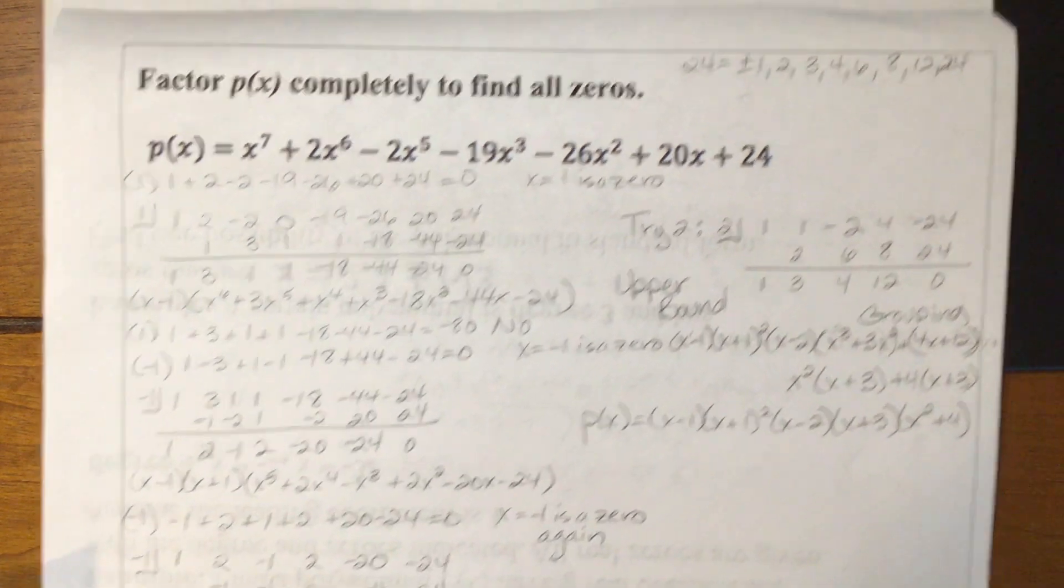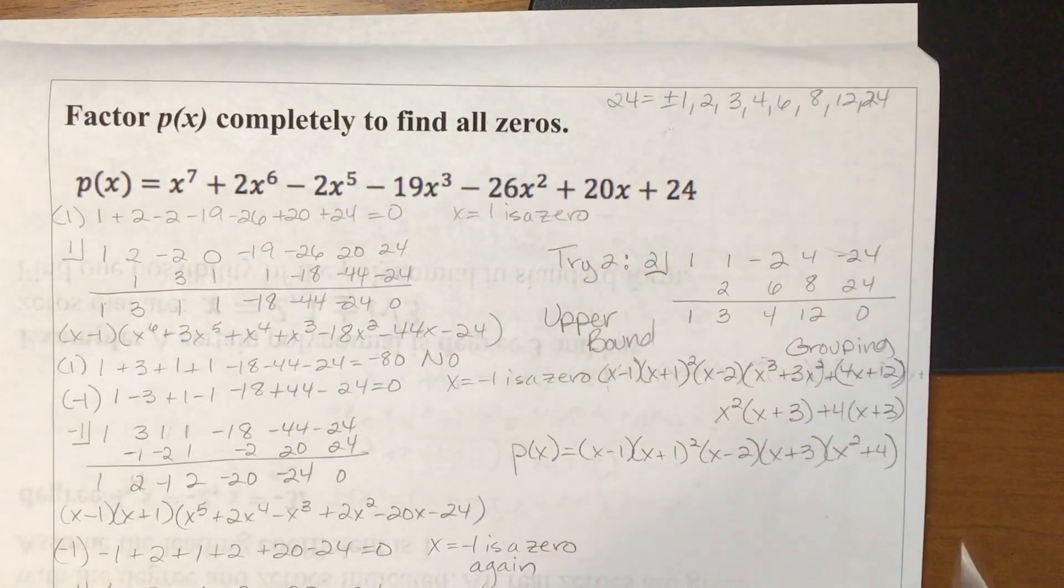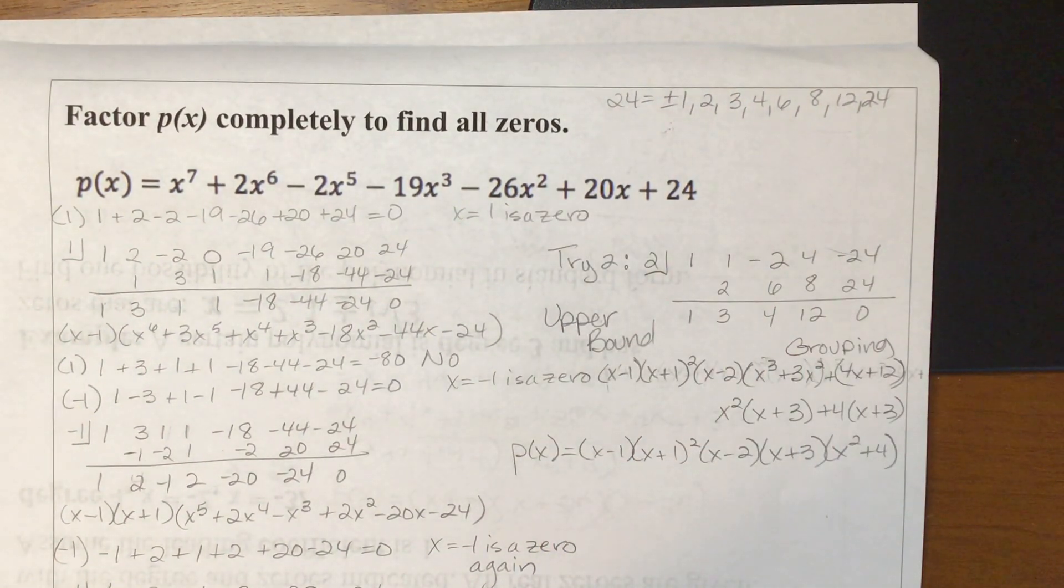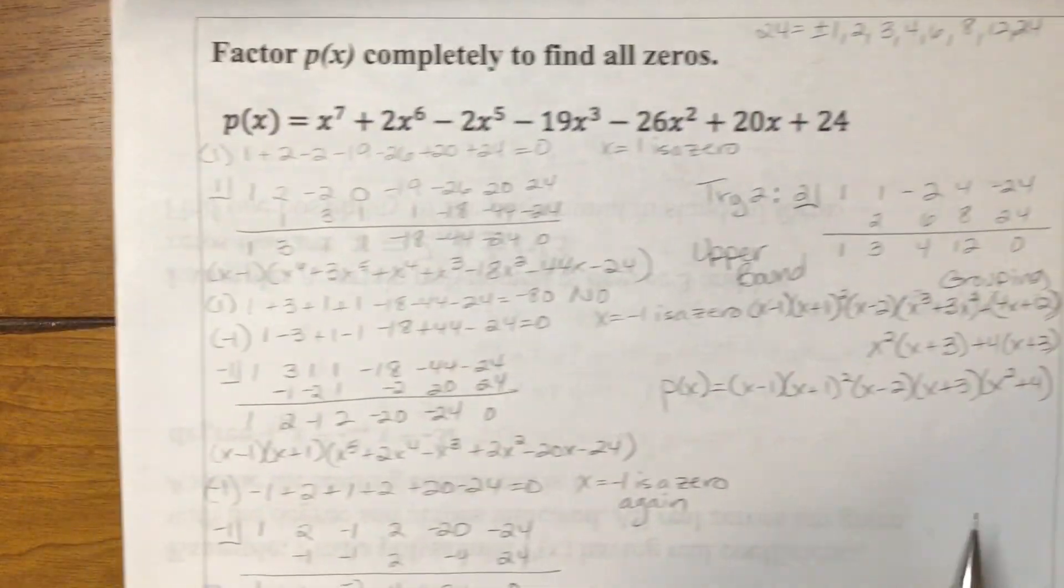First thing I started with is listing all my possible rational zeros of 24, and those are plus or minus 1, 2, 3, 4, 6, 8, 12, and 24, which is a lot to test. But we know better. We're going to start by testing the ones.